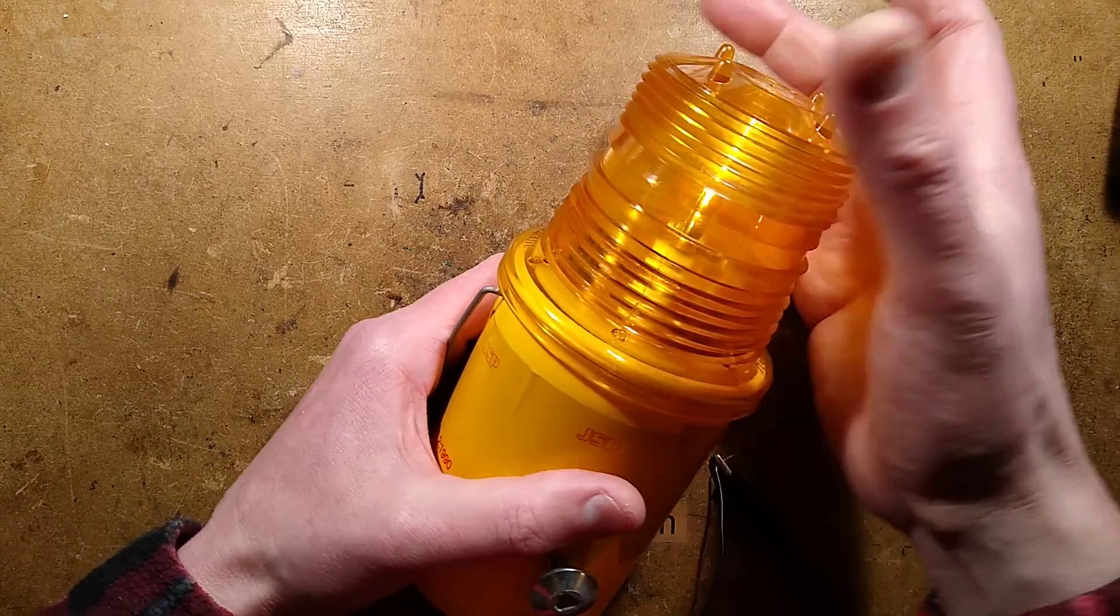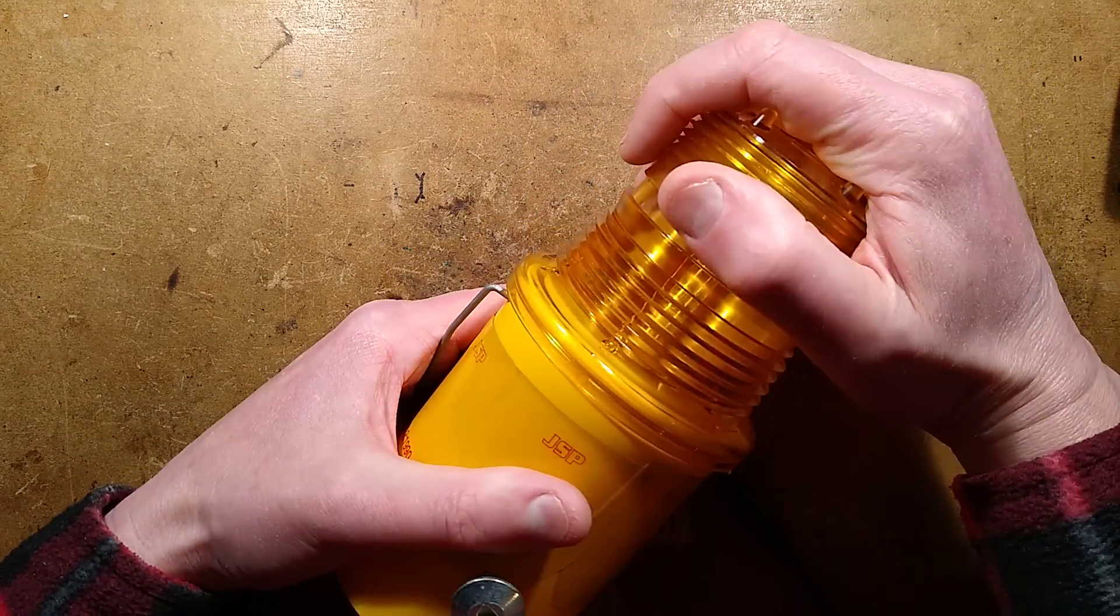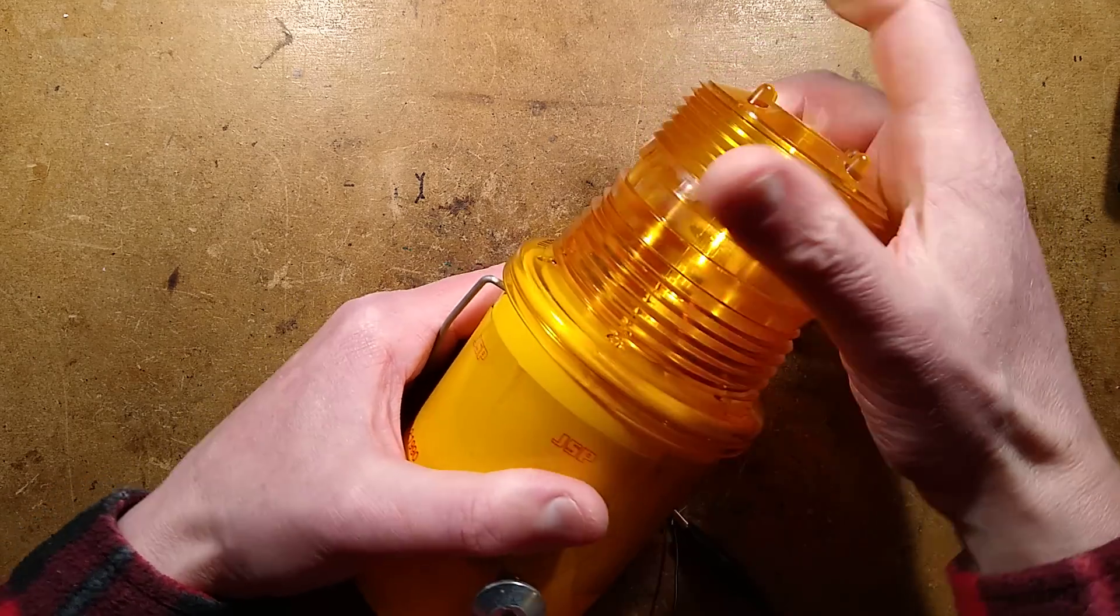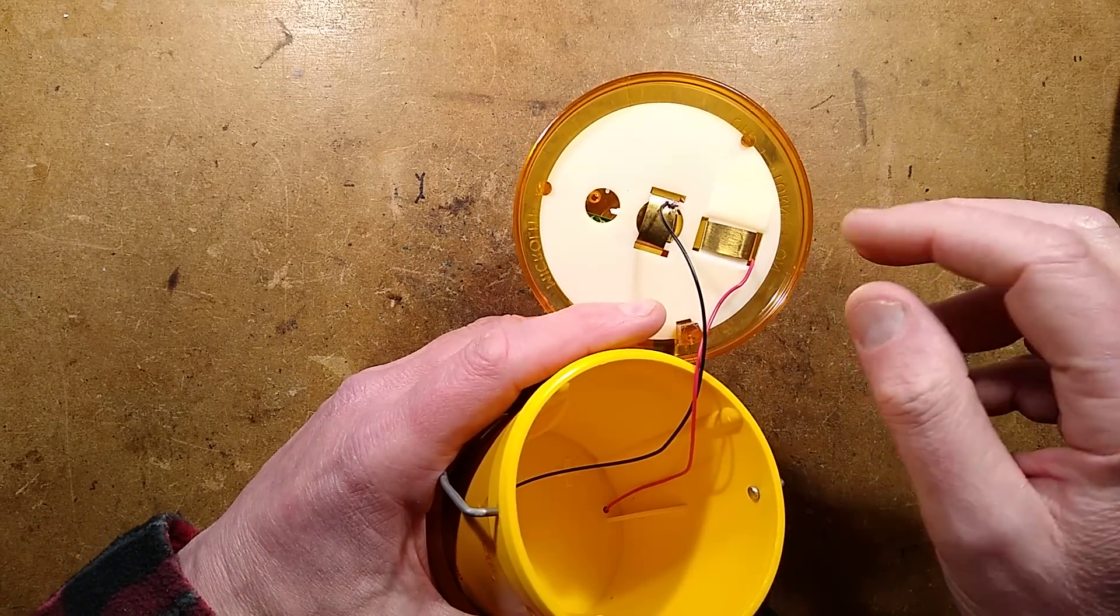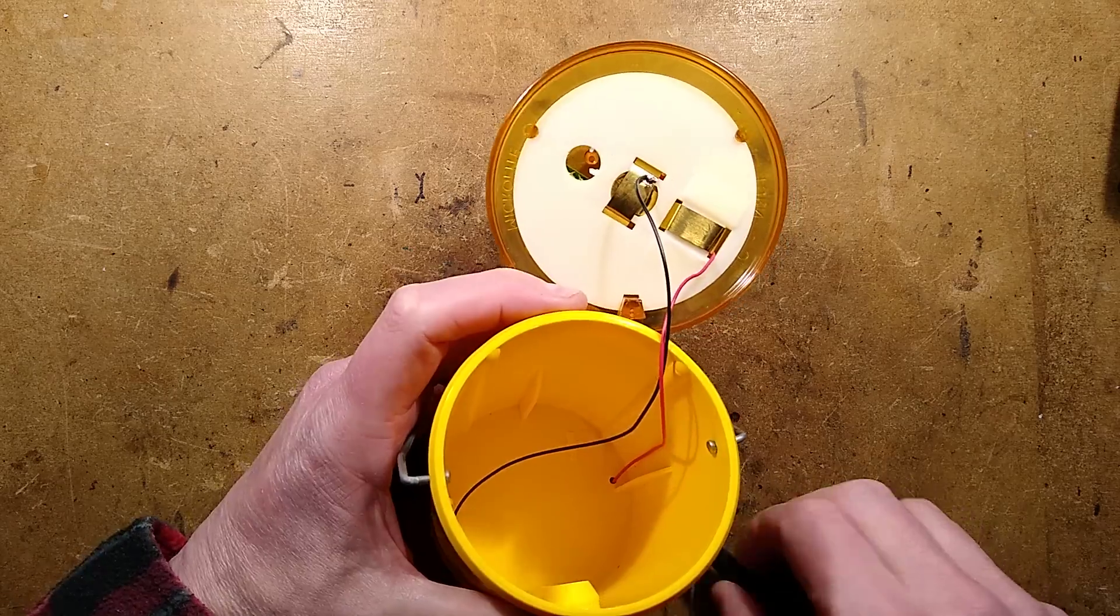So this thing physically unclips and it's worth mentioning to turn it on and off you actually rotate this top, and all it does is slide these contacts on the battery. I've got some wires tacked to this, but it doesn't really matter that much.